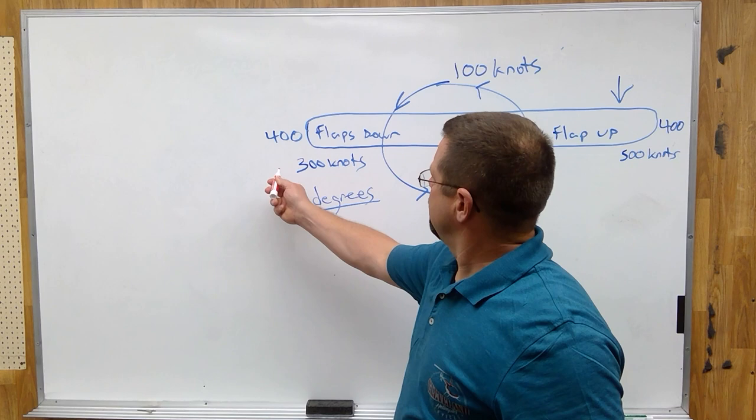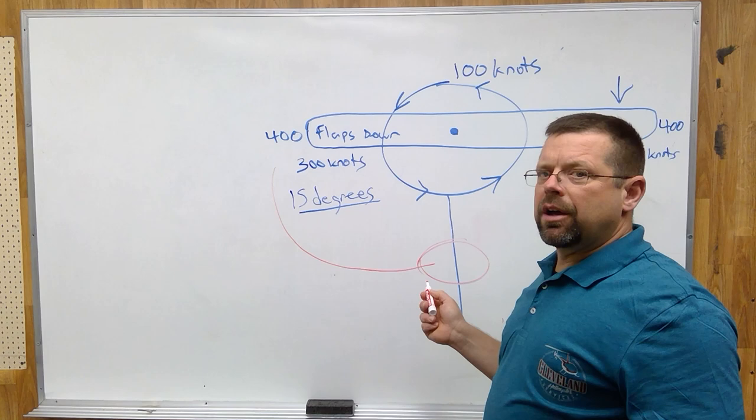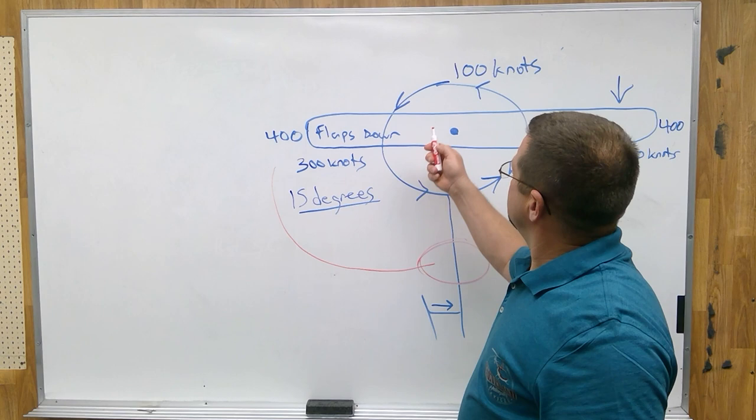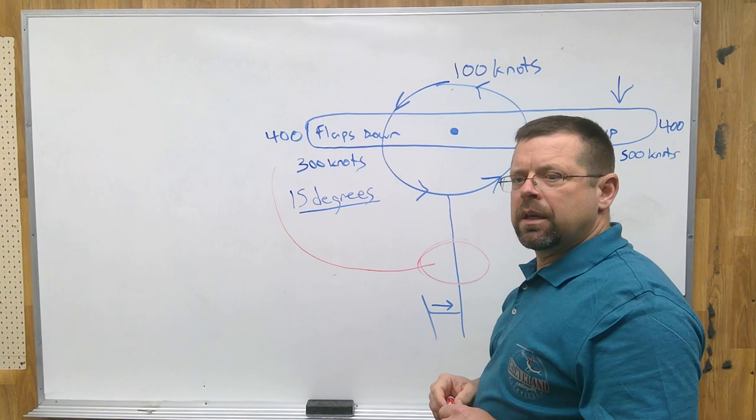90 degrees later in the plane of rotation, we're going to feel that loss of lift. That means the back of the helicopter is going to go down, the front will pitch up in retreating blade stall.